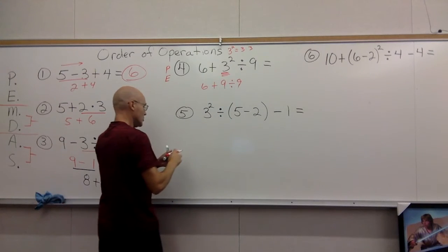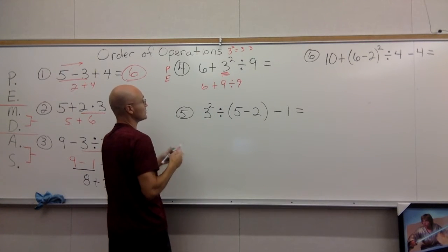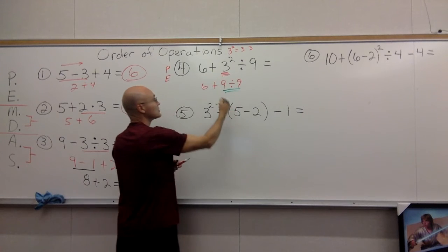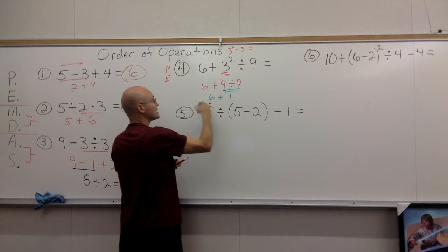9 ÷ 9 + 6. Make sure you divide first because you don't want to do addition before you do division. 9 ÷ 9 is 1, and you finally get 6 + 1, and your answer is 7.